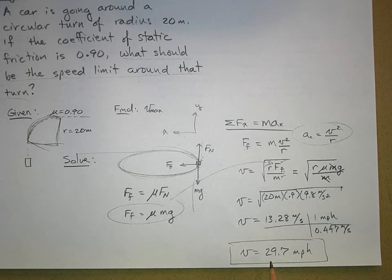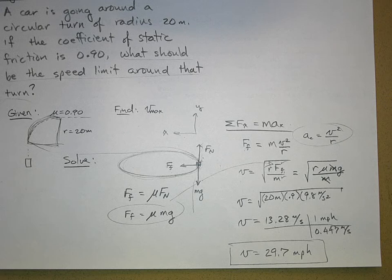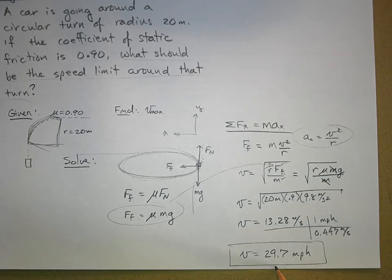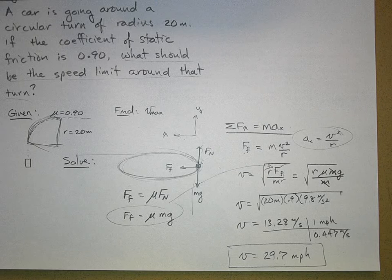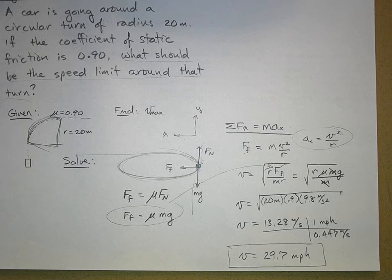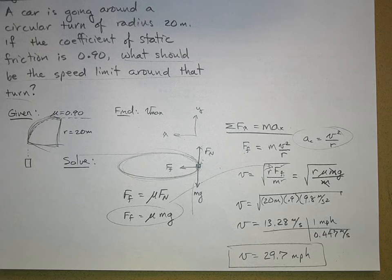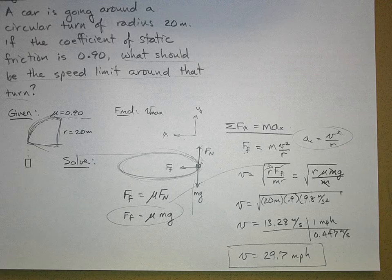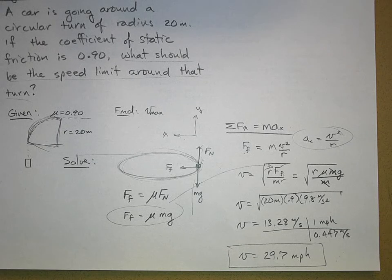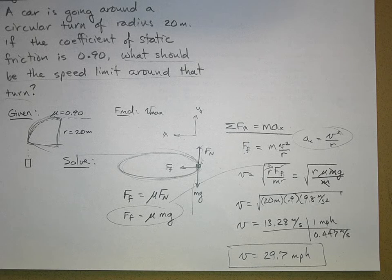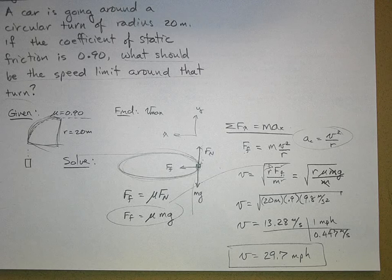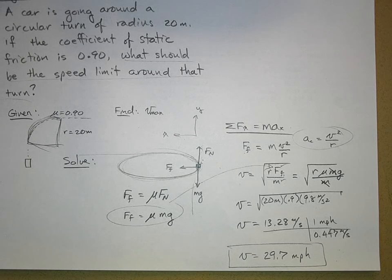Now let me ask you this: if you exceed this speed what will happen to your car? You will skid off the road. So what should be the speed limit if you're a civil engineer working for Caltrans and deciding what the speed limit has to be around that turn? You'd say 20, 30? Thirty miles an hour? You're fired if you said 30.